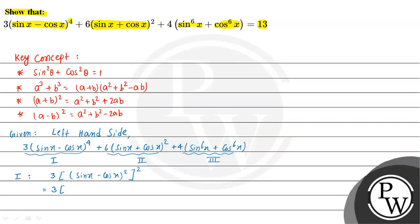Now let's solve the first part: 3 into (sinx minus cosx) whole to the power 4. We apply the (a minus b)² formula, giving sin²x plus cos²x minus 2sinx·cosx, all squared. Since sin²x plus cos²x equals 1, this becomes 3 into (1 minus 2sinx·cosx) whole squared.